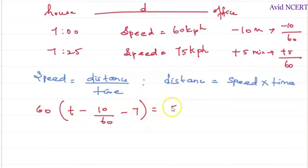In the second case, it is 75 times t plus 5 by 60. And this is 7.25 minus, since this is also already happened, so which is 7.25 and 25 minutes can be converted into 25 by 60 to convert into hour.